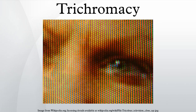Each of the three types of cones in the retina contains a different type of photosensitive pigment, composed of a transmembrane protein called opsin and a light-sensitive molecule called 11-cis retinal. Each different pigment is especially sensitive to a certain wavelength of light. The three types of cones are L, M, and S, which have pigments that respond best to light of long, medium, and short wavelengths respectively.